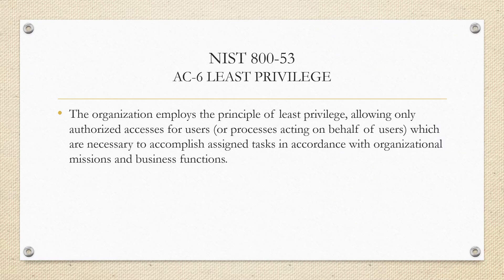AC-6 focuses on least privilege. The control description reads: the organization employs the principle of least privilege, allowing only authorized access for users or a process on behalf of users, which are necessary to accomplish assigned tasks in accordance with organizational missions and business functions.